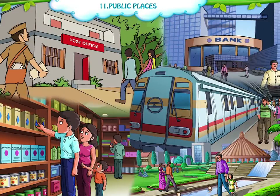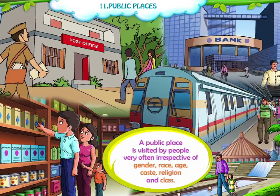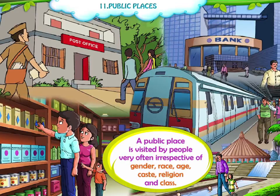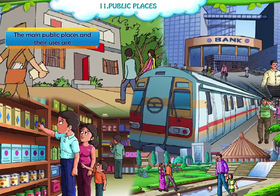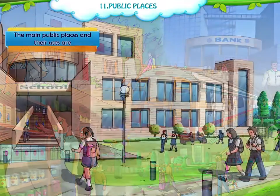A public place is a social place that is open to all and is visited by people very often, irrespective of gender, race, age, caste, religion and class. The main public places and their uses are as follows.